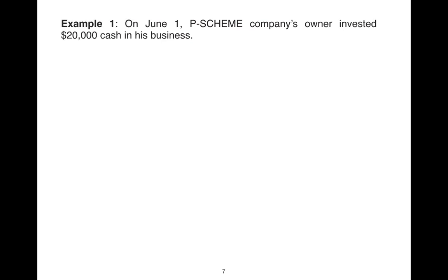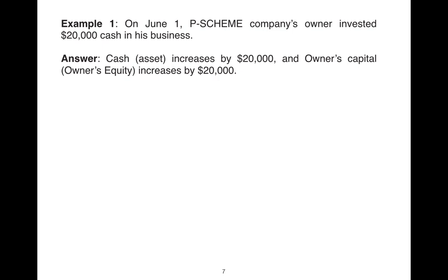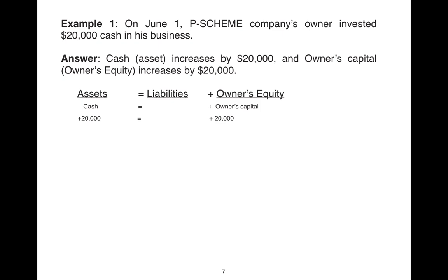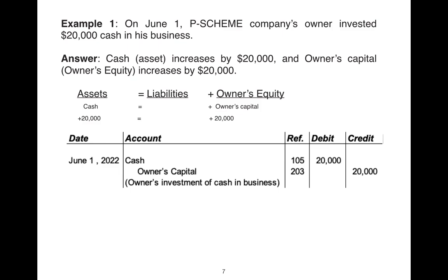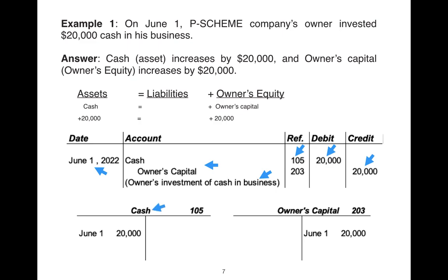In example one, the owner of Peace Scheme Company invested $20,000 US dollar in his business. We have an increase in cash by $20,000 and an increase in owners capital by the same amount — plus $20,000 on both sides of the accounting equation. Our journal entry shows the date, account name, a short explanation, account number, debit cash and credit owners capital. Finally, we do the posting using the T-account showing the date and amount on the debit side for cash and on the credit side for owners capital.